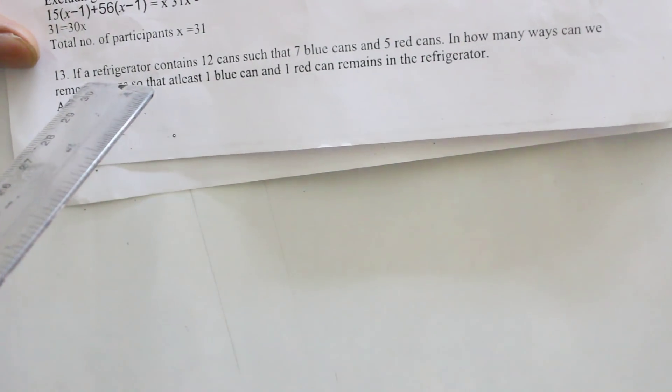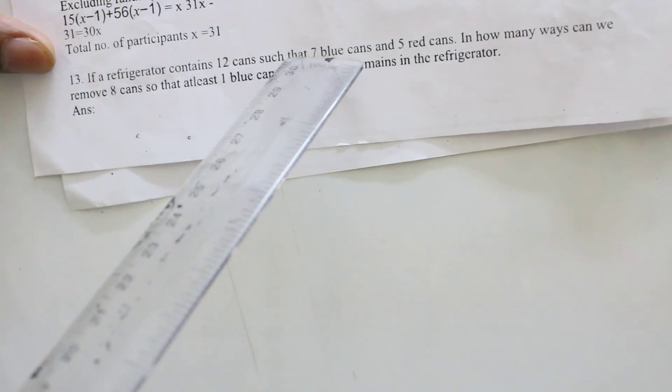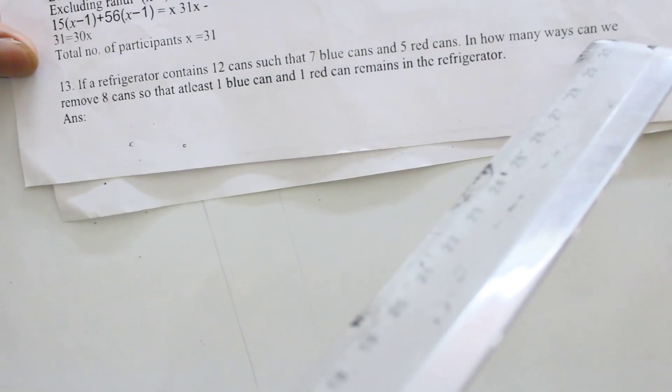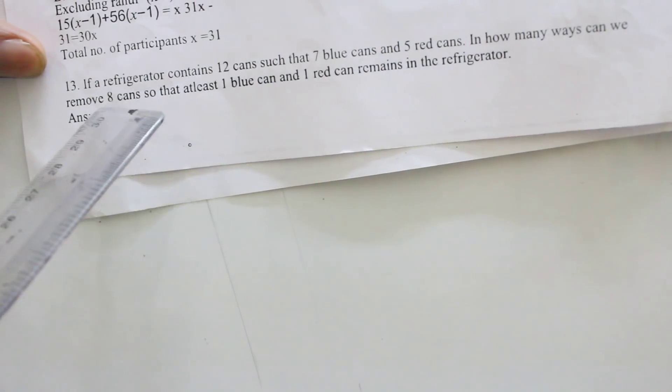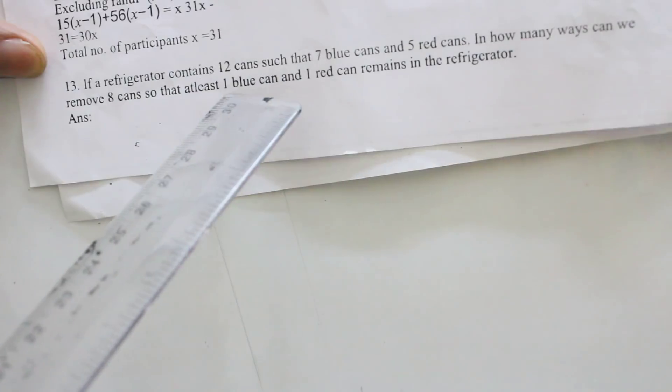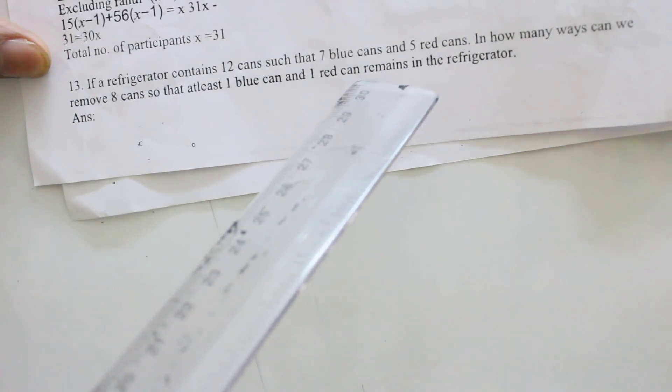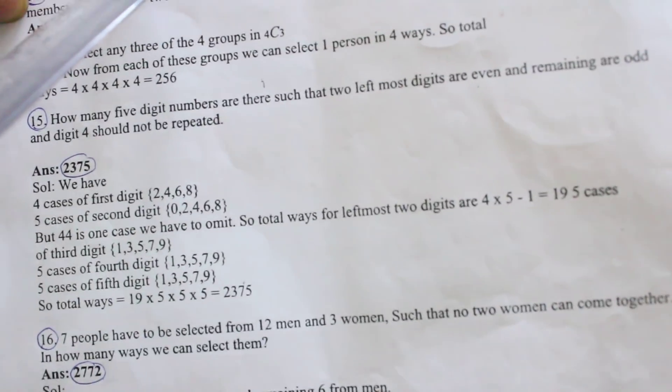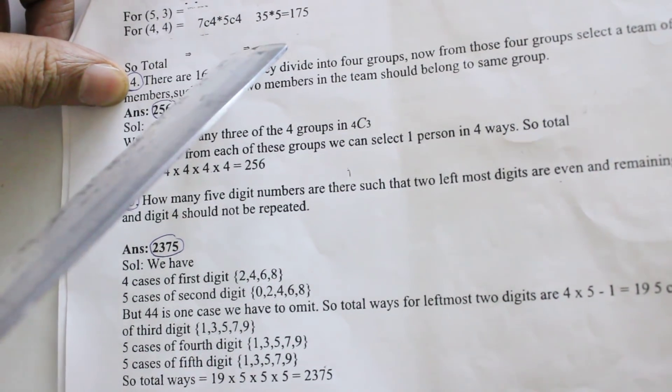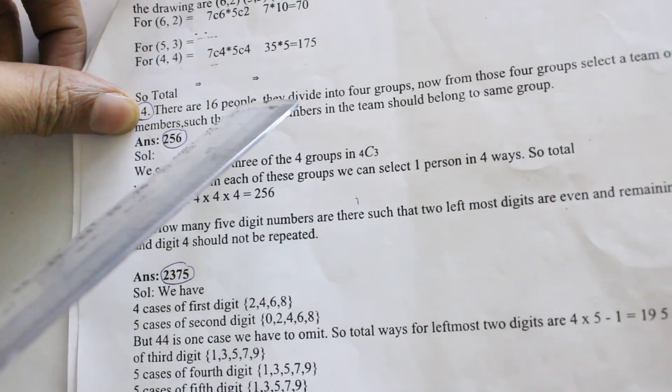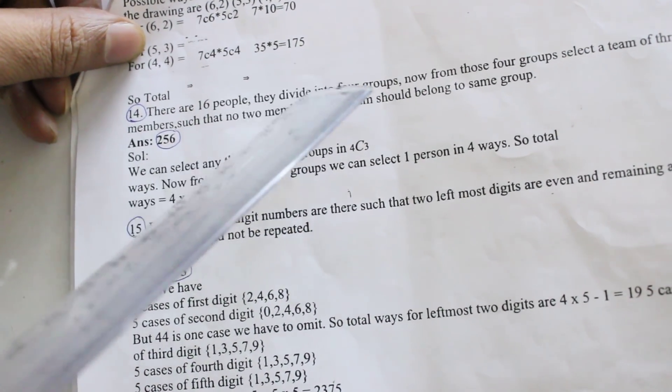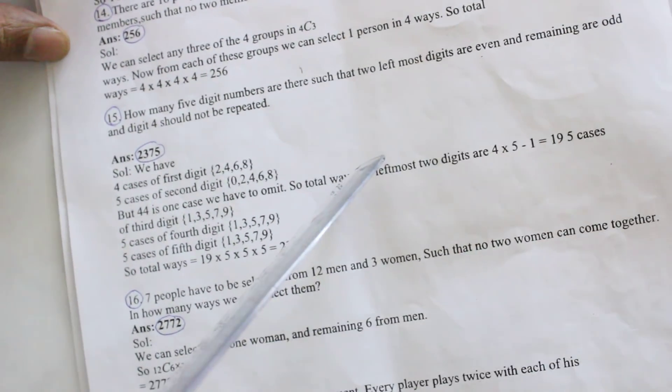Thirteenth one: If a refrigerator contains 12 cans such that 7 blue cans and 5 red cans, in how many ways can we remove 8 cans so that at least 1 blue can and 1 red can remains in the refrigerator? This question is the answer: 7C4 into 5C4, this is one case. 7C6 into 5C2 is the other case. The total answer is 70 plus 175, finally 245 is the answer.